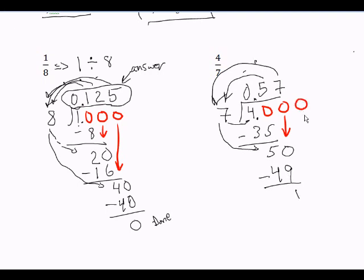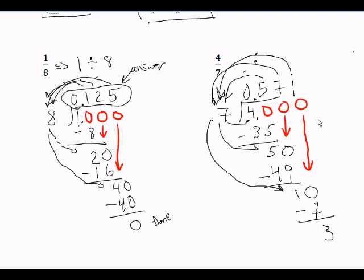Do another place value. And you can keep on doing this until you get a 0 remainder, if you get a 0 remainder. How many times does 7 go into 10? 1 time. 1 times 7 is 7. We subtract, and we get 3.